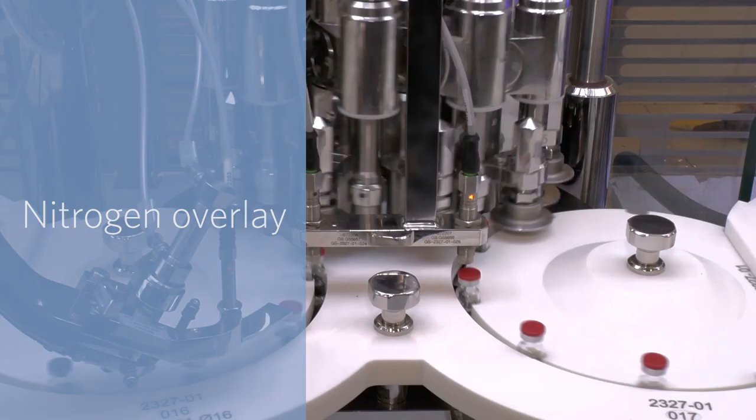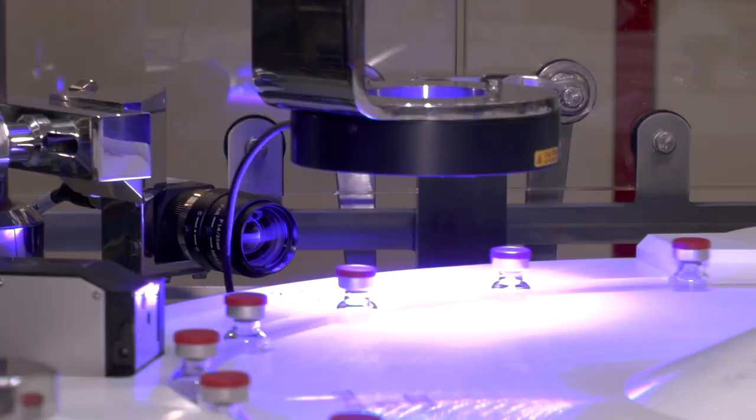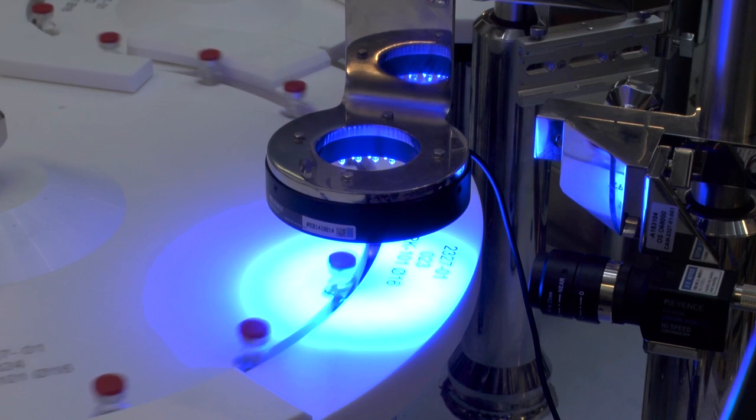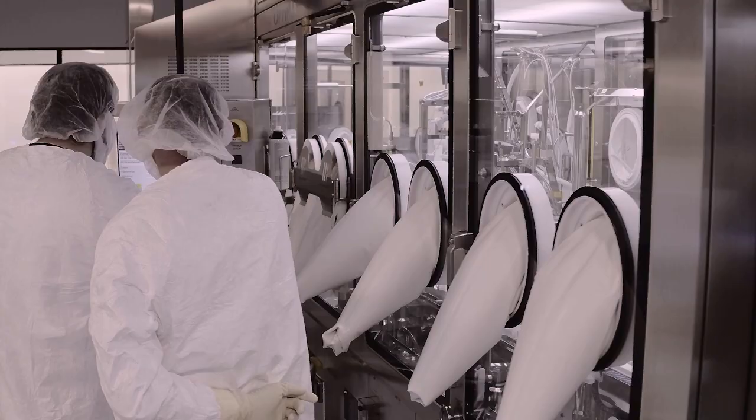Vials are kept within a restricted access barrier system and transported into tubs or trays via a series of star wheels. During loading, vials are identified with printing on the caps. The vials are also counted as they are loaded into the trays.